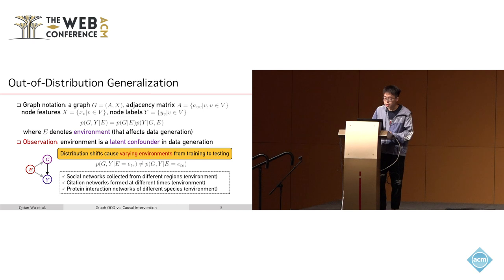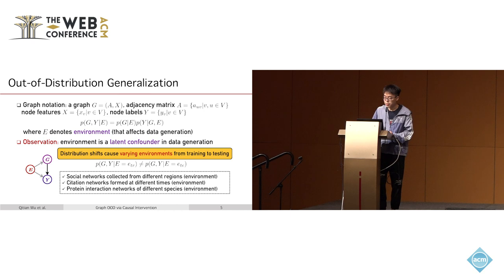For the problem formulation of out-of-distribution generalization on graphs, the graph G is denoted by adjacency matrix A, node features X, and node labels Y. The data generation distribution is written as a joint distribution where E is a latent factor causing different data distributions across environments. The environment E is a latent confounder for both the input graph G and the node labels Y.